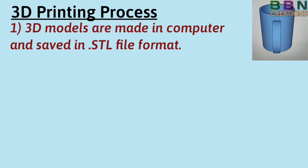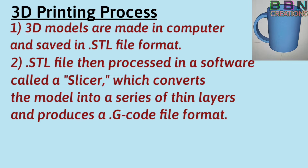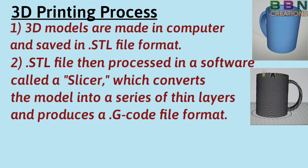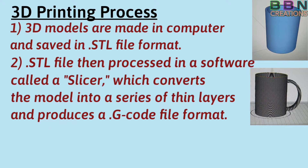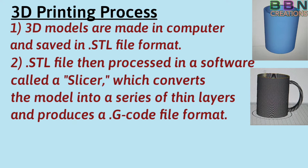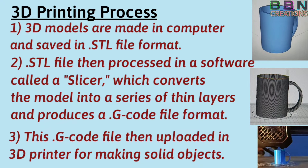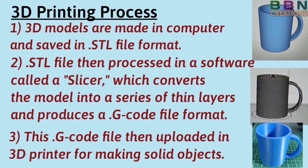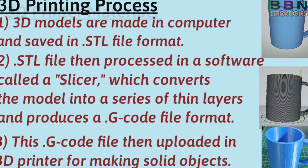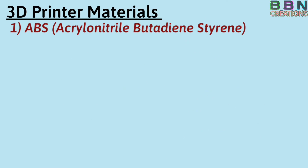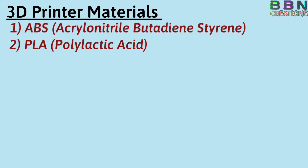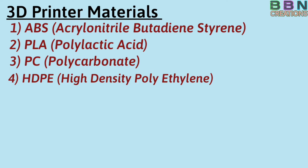3D models are made in a computer and saved in STL file format. The STL file is then processed in a software called Slicer, which converts the models into a series of thin layers and produces a gcode file. This gcode file is then uploaded into the 3D printer for making solid objects. 3D printer materials include ABS, PLA, PC, and PETG.